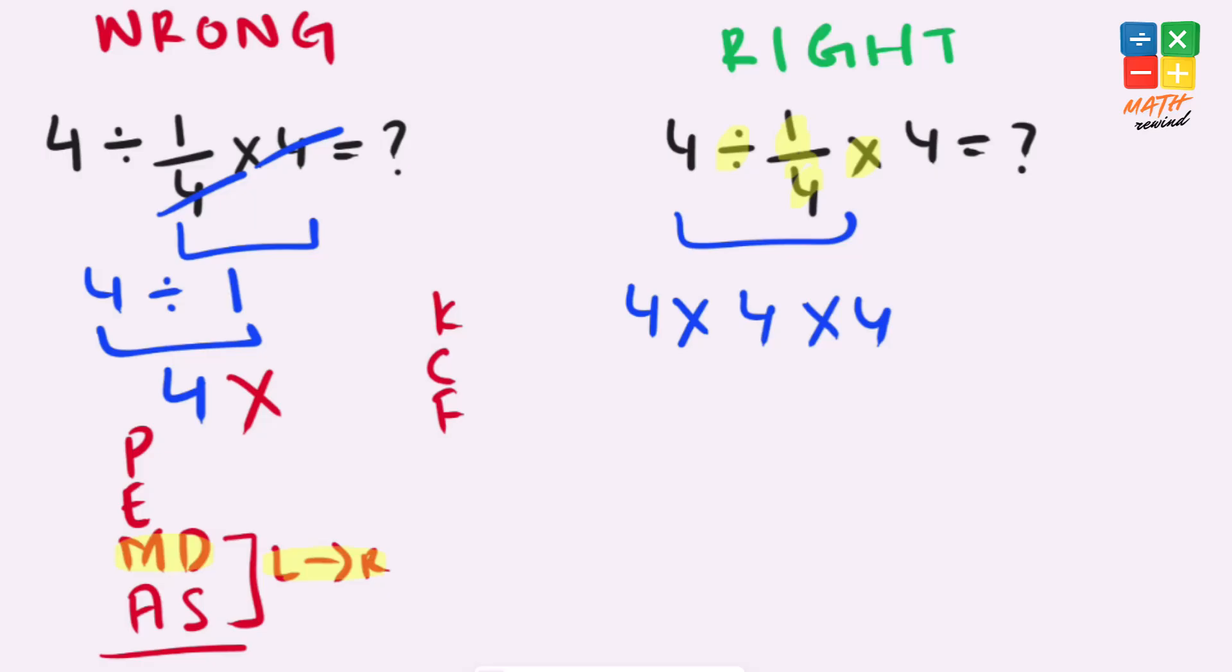Now we have two multiplication operators present in this expression. Simply work from left to right, so 4 times 4 gives us 16, and 16 times 4 gives us 64, which is the correct and final answer to this problem.